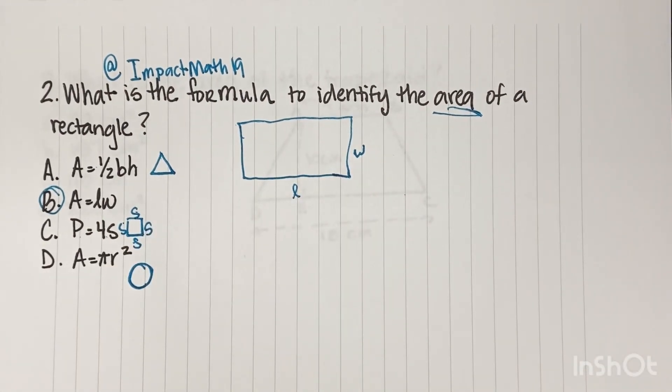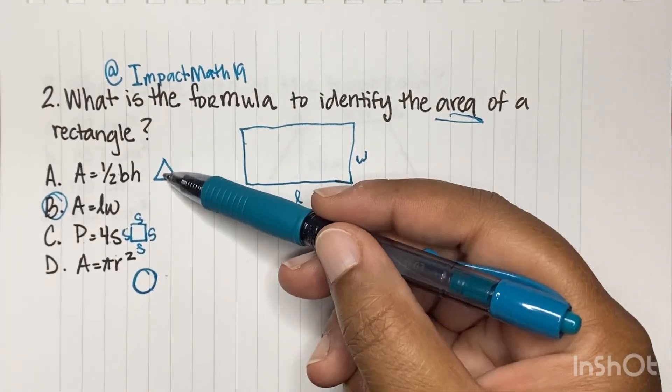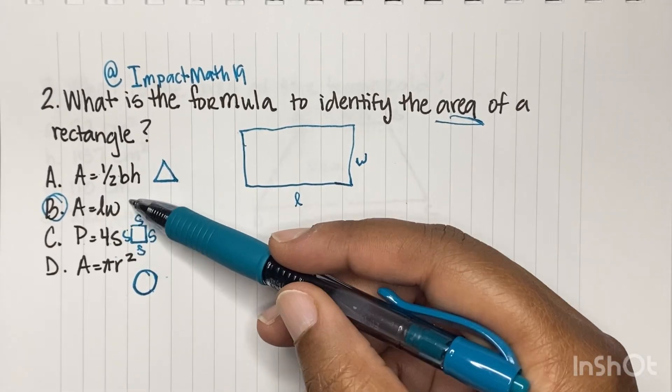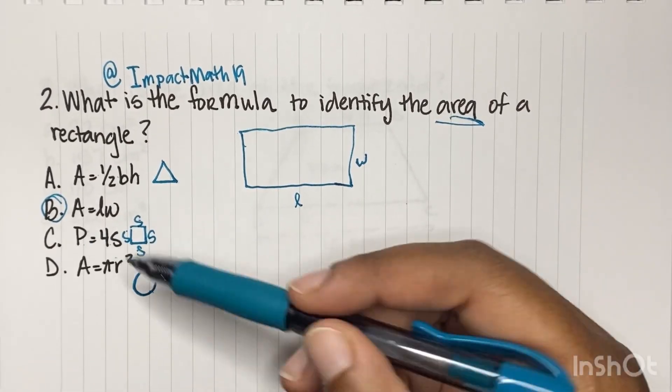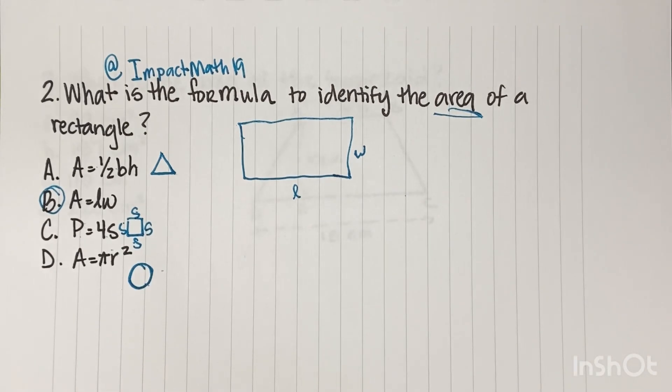So memorize these formulas, okay? Triangle, rectangle, square, perimeter, and area of a circle. Alright, number three.